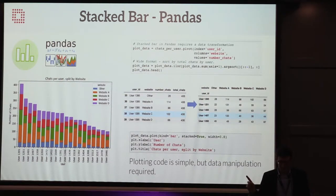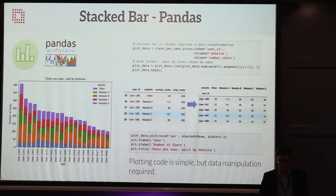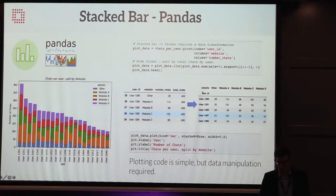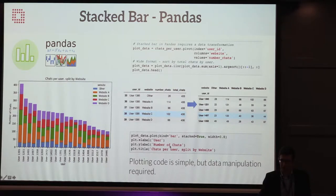Stacked bars in Pandas are a lot easier. Pandas subscribes to the idea that you do the data manipulation outside of the plotting — probably because it's a really good data manipulation library. To create the bar chart itself is really easy: it's just plot_data.plot(kind='bar', stacked=True). However, you do need to go from long format — user ID, website, number of chats — to wide format where user ID is on the columnar axis. Once you've got it in that format, it's just dot plot. Simple code to plot, but you're creating extra intermediate datasets.